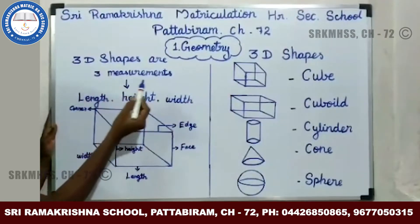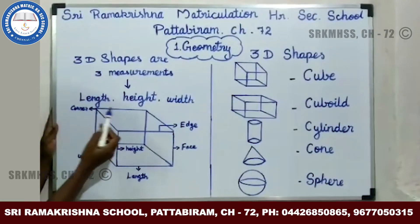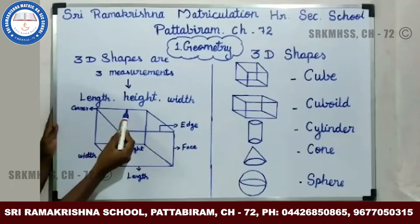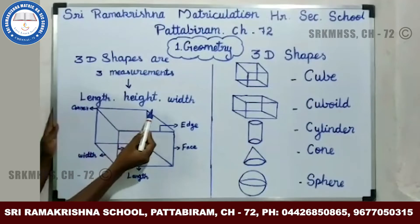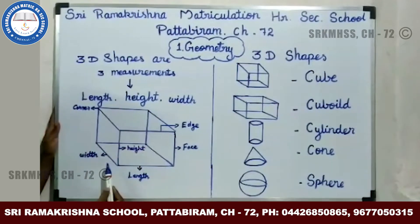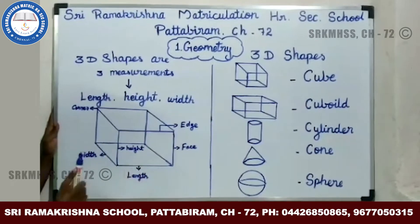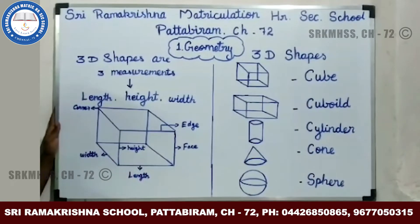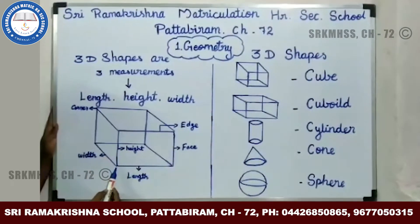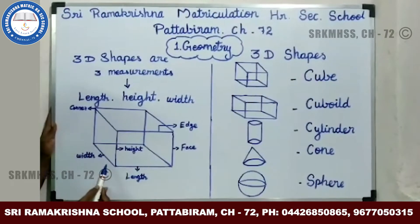3D shapes have 3 measurements: length, height, and width. Here is an example of a 3D shape. It is a cube. A cube has 3 measurements: height, length, and width.